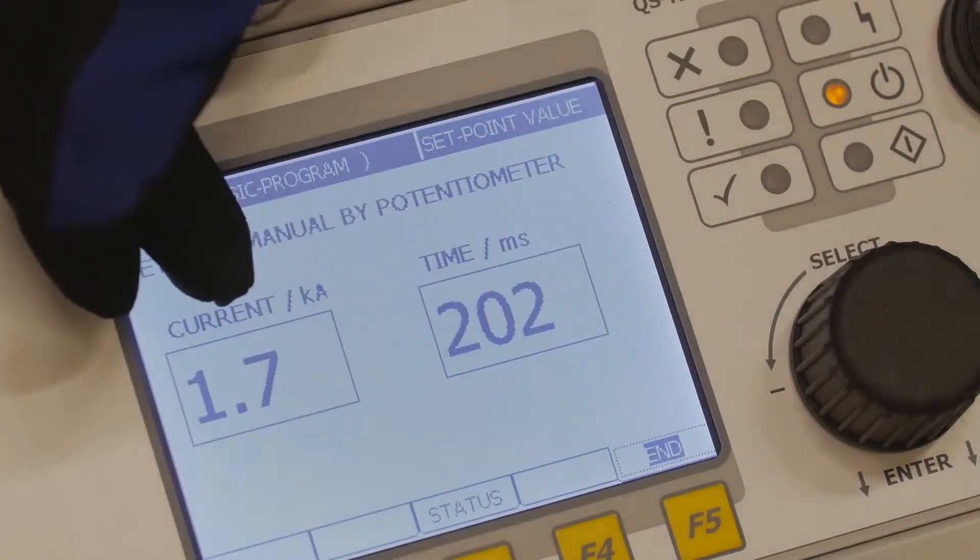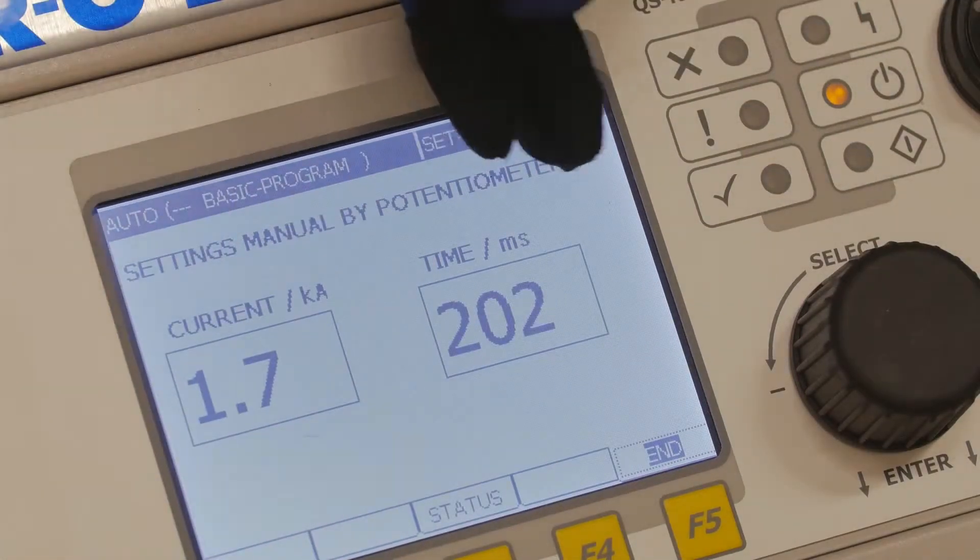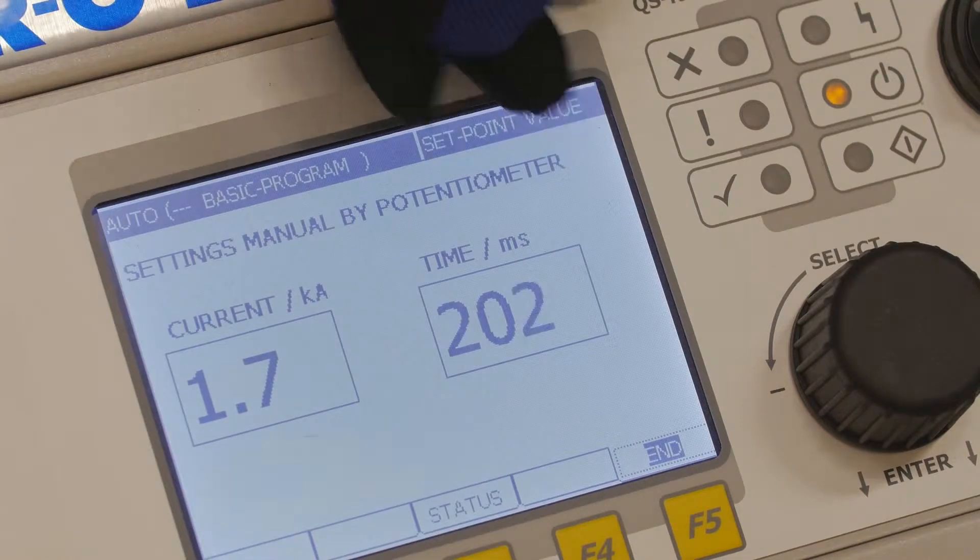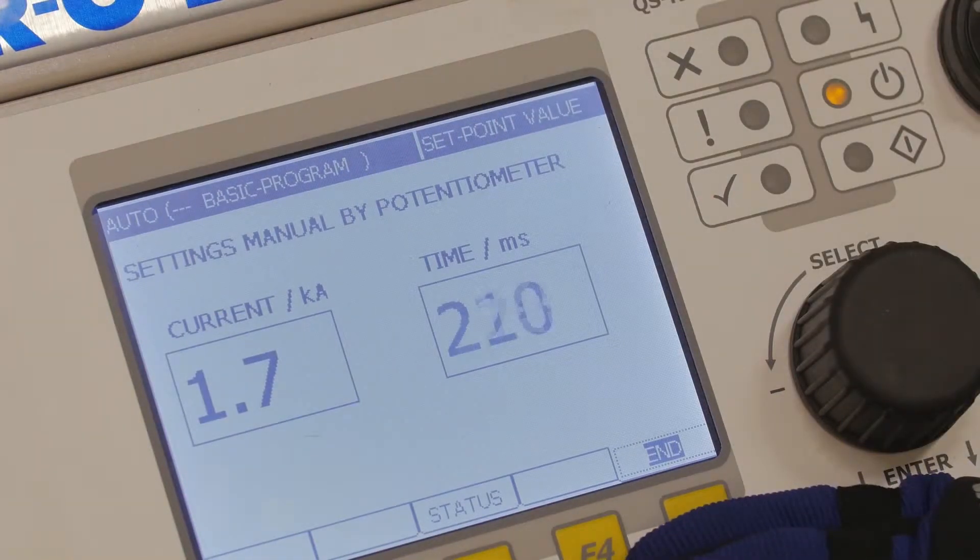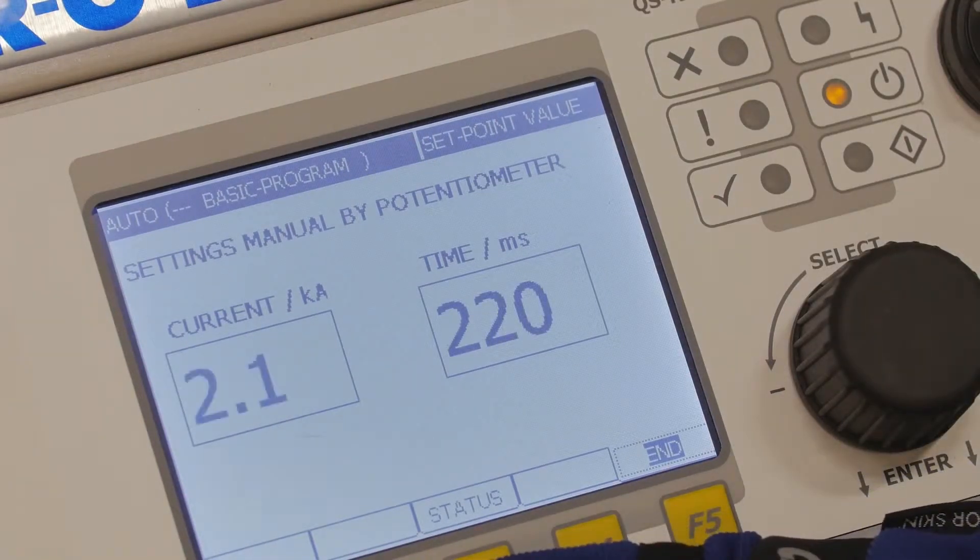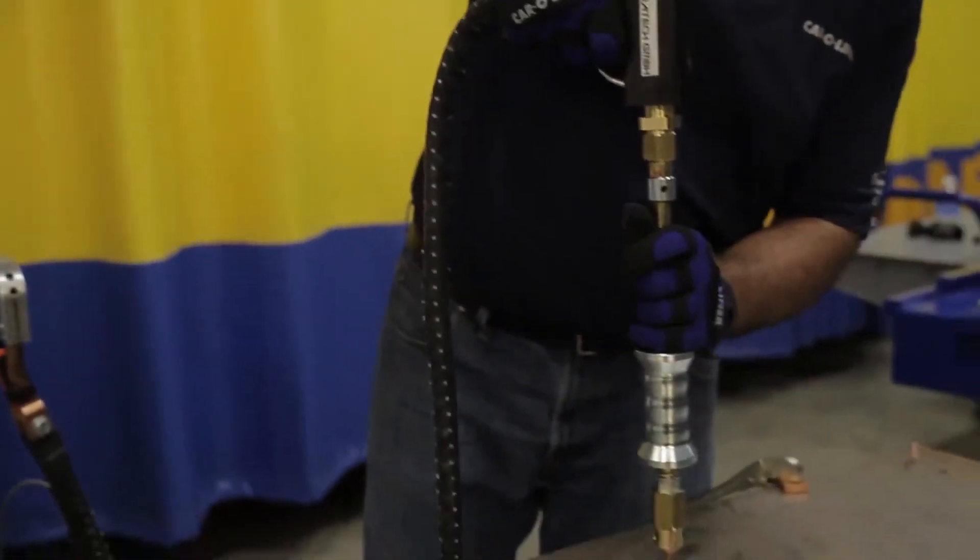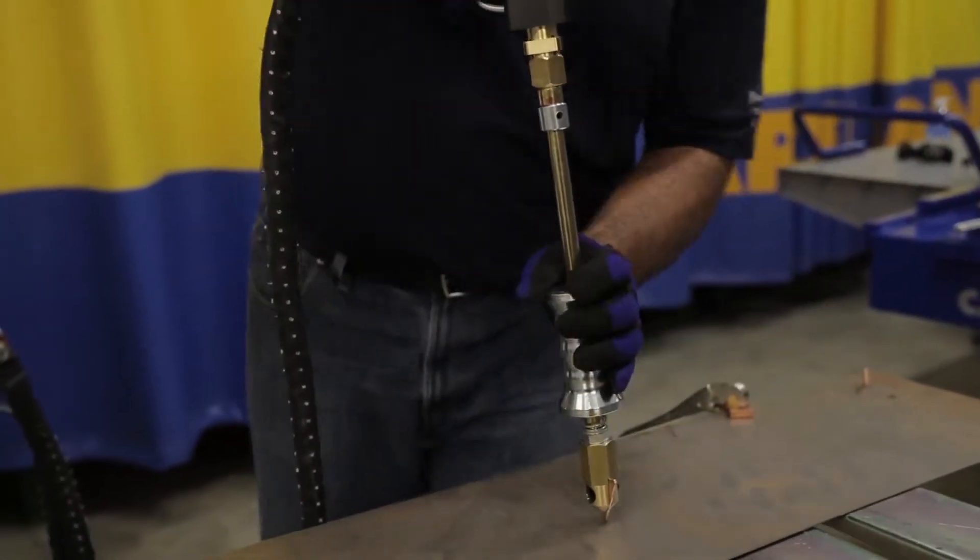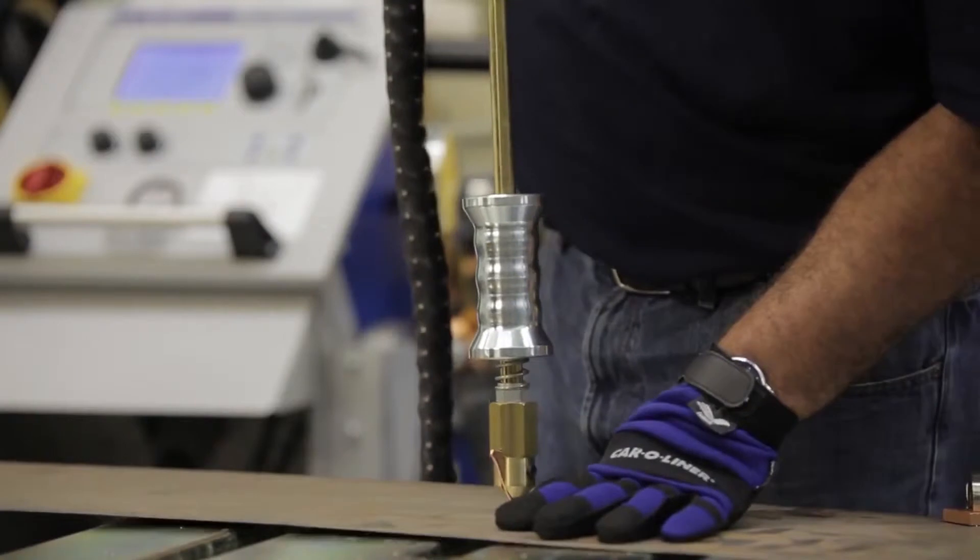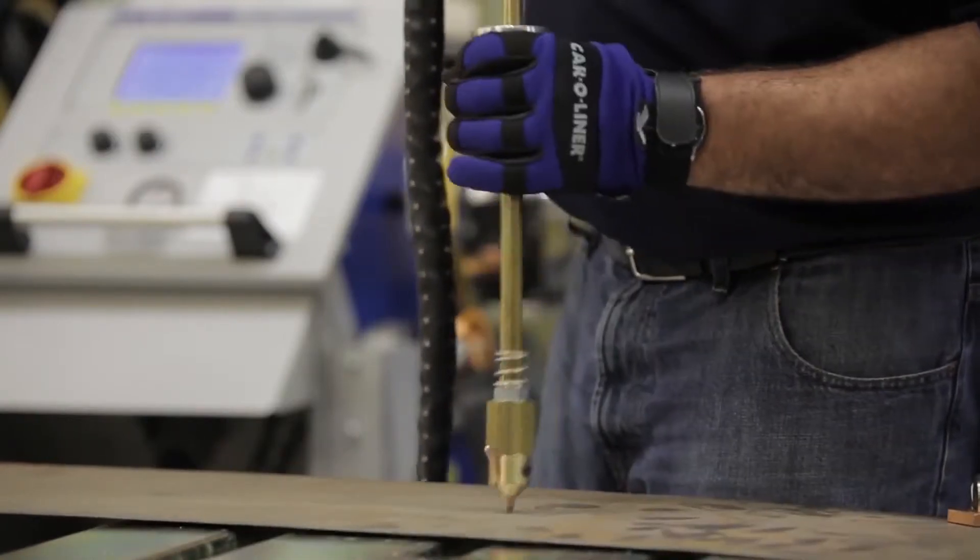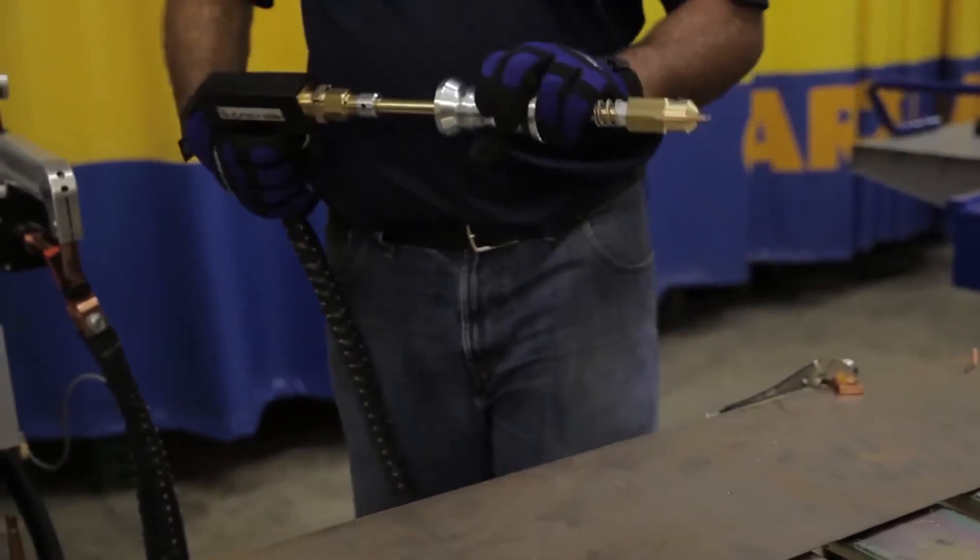On our display we can now adjust our amperage or kiloamps or time in milliseconds. So for this we may bump up a little bit higher and we'll do a test weld to see. We're going to press firmly against the panel. There we got a good grasp that allows me to pull and then I would twist to release when we're done.